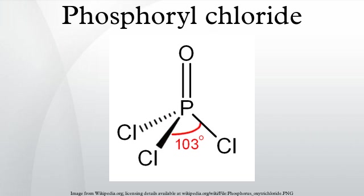It is manufactured industrially on a large scale from phosphorus trichloride and oxygen, or phosphorus pentoxide. It is mainly used to make phosphate esters such as tricresyl phosphate.